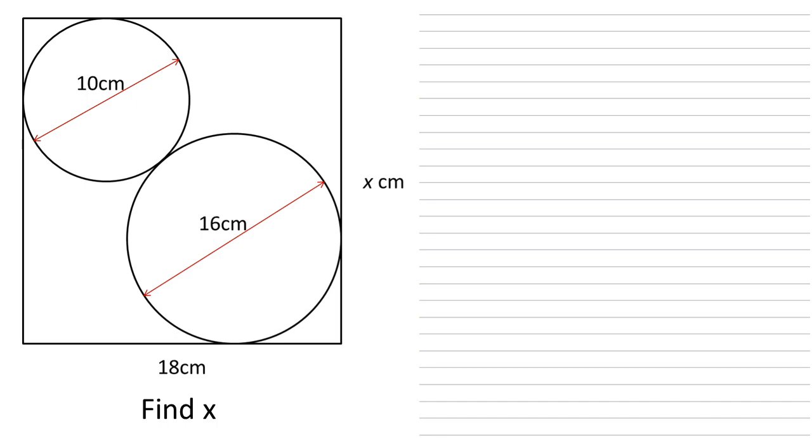Let's start off by adding to the diagram information that we do know. We're trying to find the vertical height X so let's try and build that up. We can put a vertical line in our top circle here which we know must be five centimeters long because it's a radius of the circle and we can do the same at the bottom. This one must be eight centimeters because it's the radius of the bottom circle.